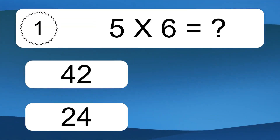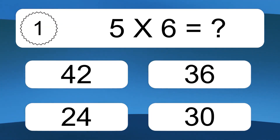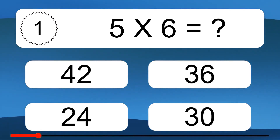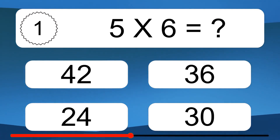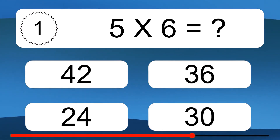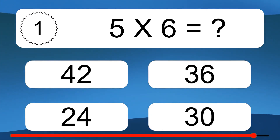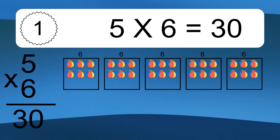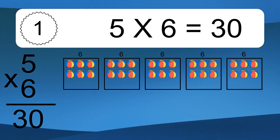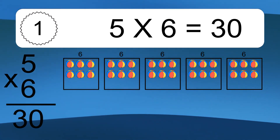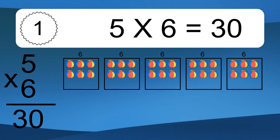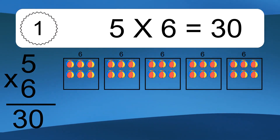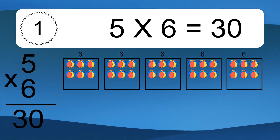5 times 6 equals what? 5 times 6 equals 30. We have 5 boxes, and each box has 6 colorful balls inside. If you count all the balls in all the boxes together, you will have 5 times 6 balls. This equals 30 balls.